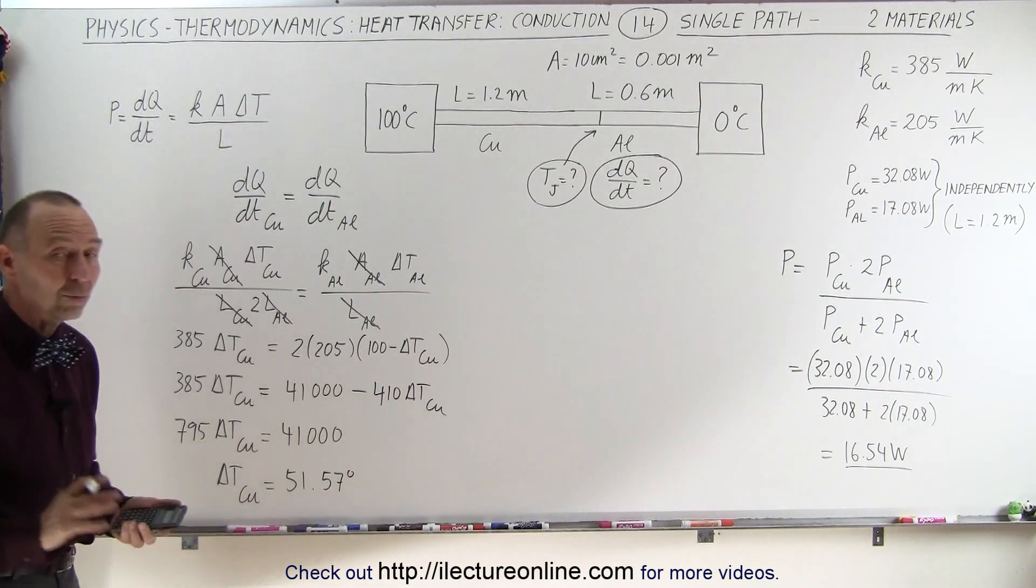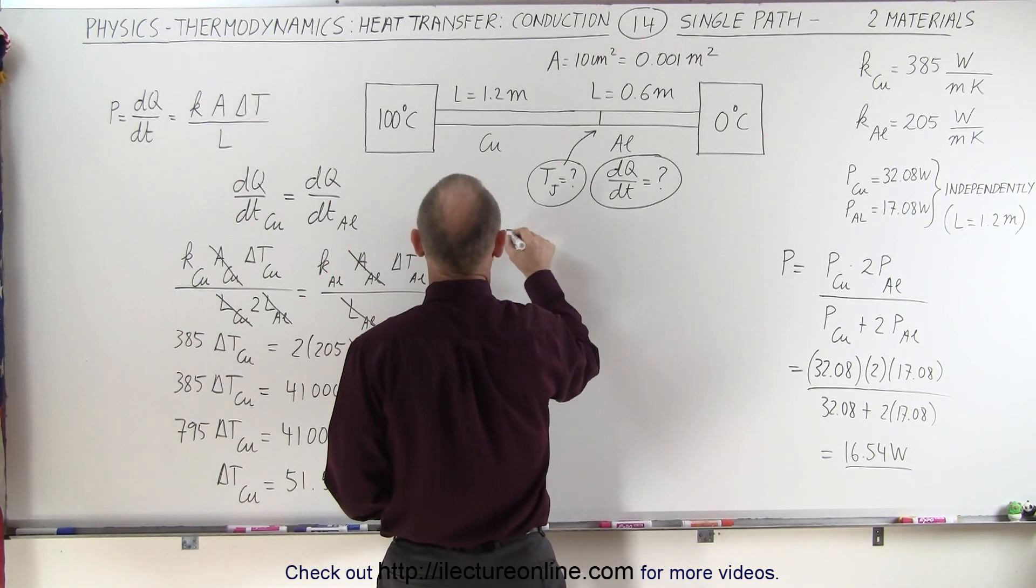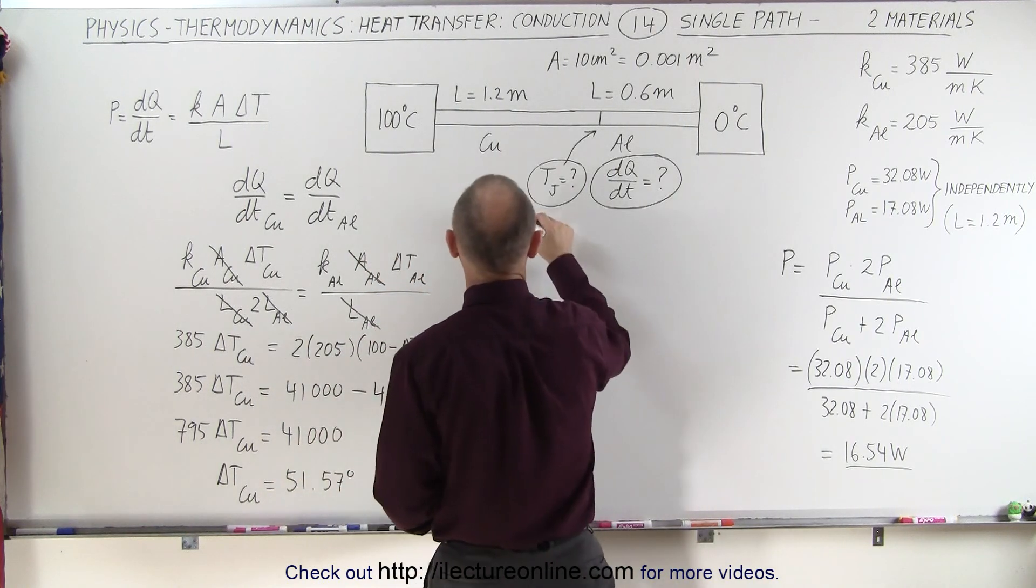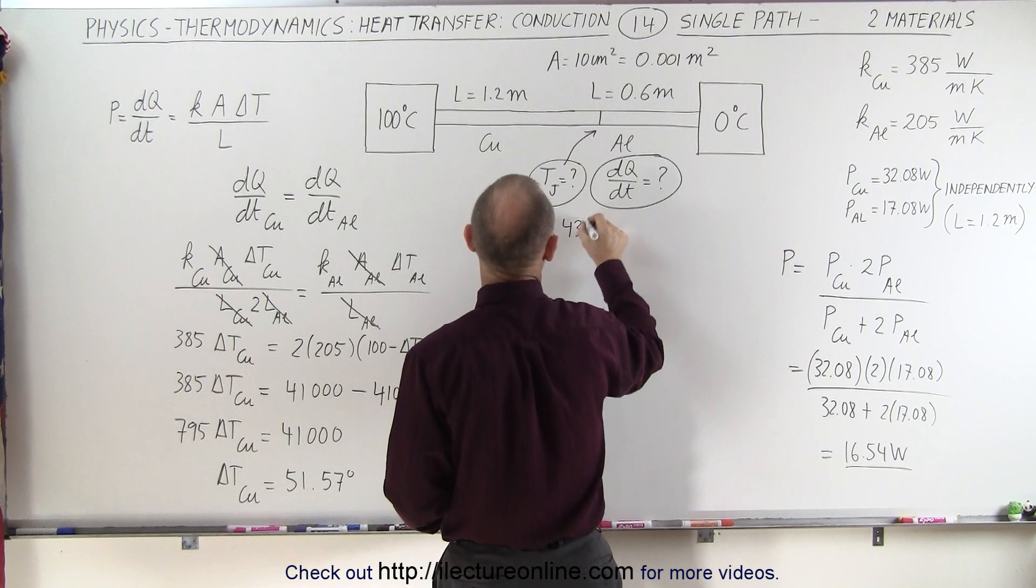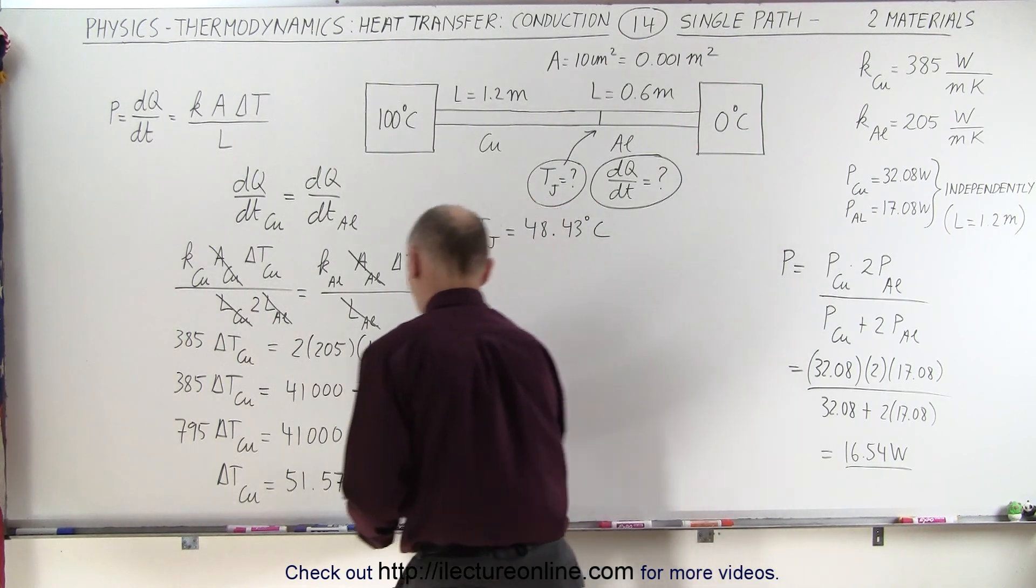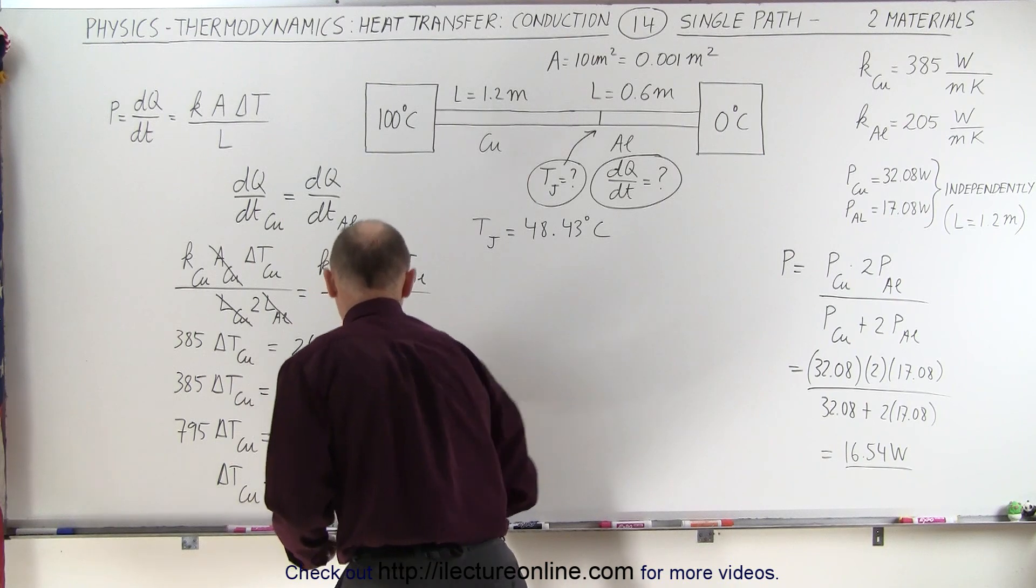So that's the difference, the change, which means the junction temperature is 100 minus that, 100 minus that would give us 48.43 degrees centigrade. That would be, of course, degrees, or centigrade degrees is the better way of writing it.